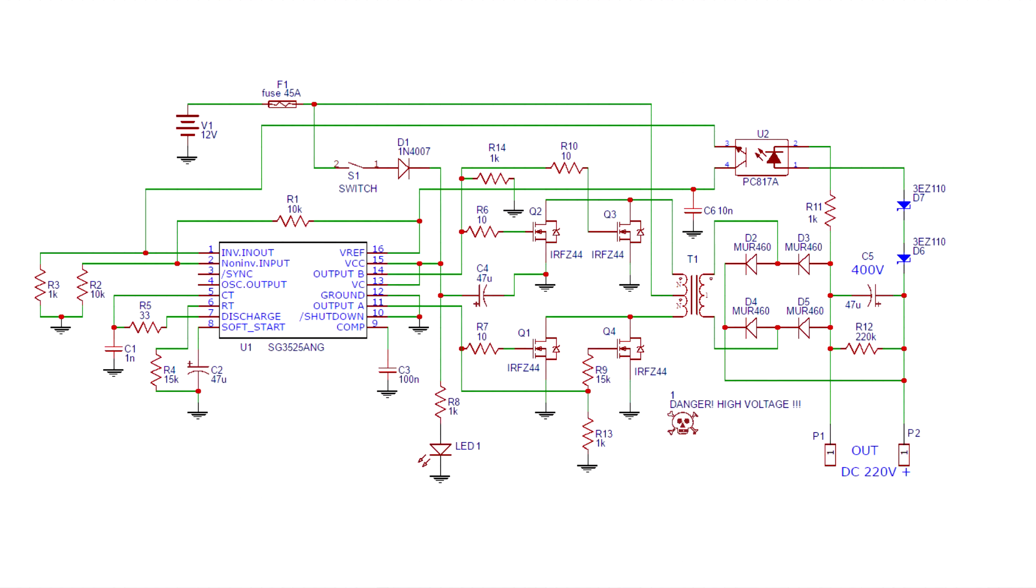To increase the output power, fets need to be replaced by more powerful ones. Say IRF3205. Add a second pair. And of course, replace the transformer with a more powerful one. Replace the output rectifier, the electrolytic capacitor and the fuse. And the circuit will work like this. With this approach, the inverter can develop a power of 300 to 400 Watts.